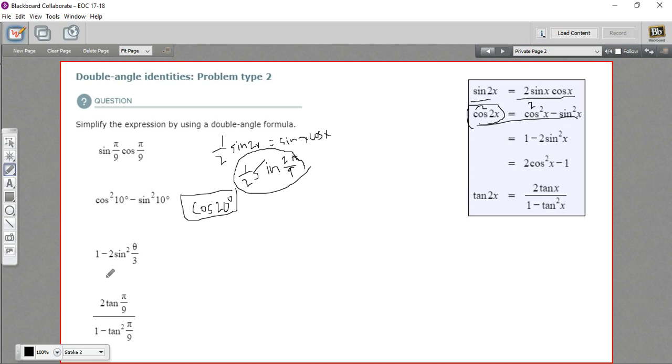Here we have 1 minus 2 times the sine squared of theta over 3. So that looks like this one. 1 minus 2 times the sine squared of x. And it doesn't look like we have to do anything to change that. So this also equals the cosine of 2x. Our x in this case is theta over 3. So this would be the cosine of 2 times theta over 3.